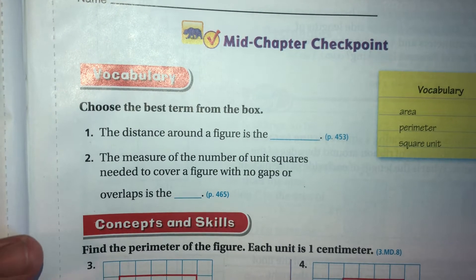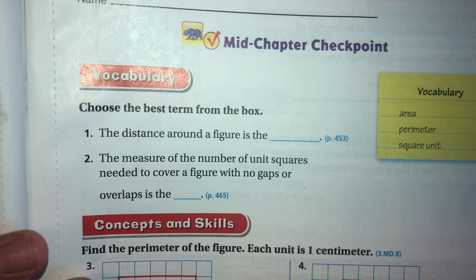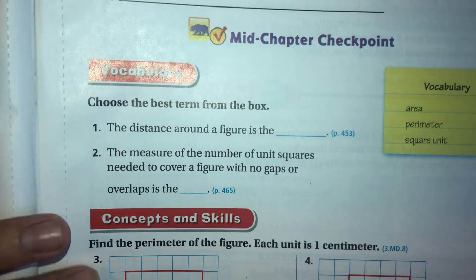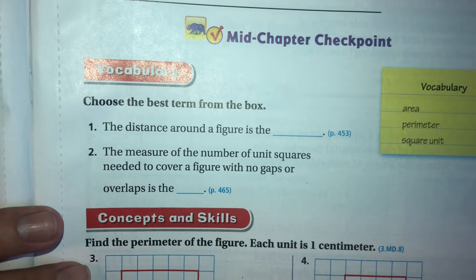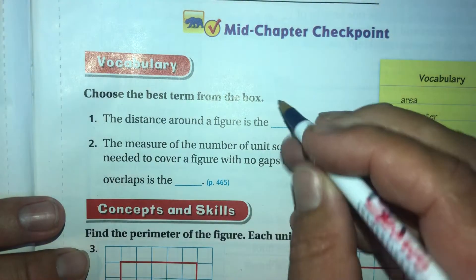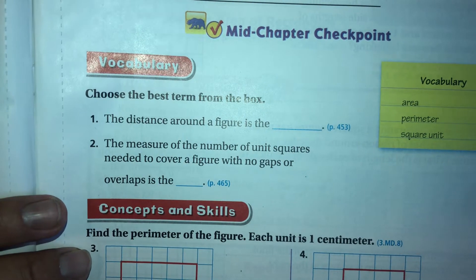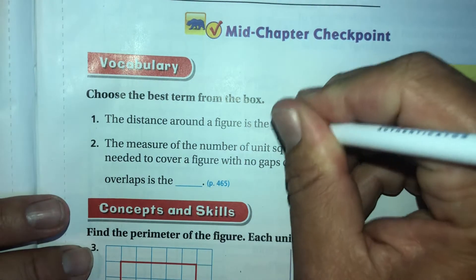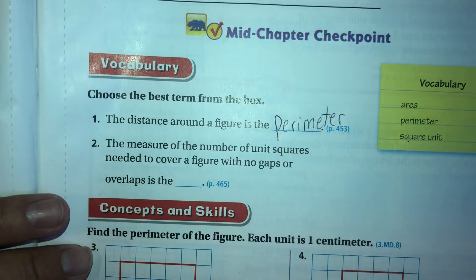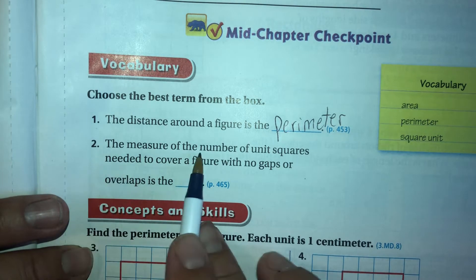Okay, welcome third graders to the chapter 11 mid-chapter checkpoint instructional video. We're going to be going over pages 477 and 478. Okay, the distance around a figure - it's kind of like the example we've used in class, the fence. If you just want to know around a figure, you're going to use perimeter.